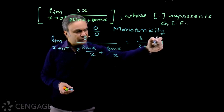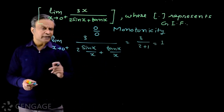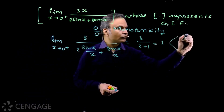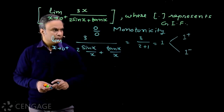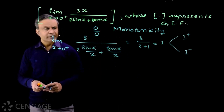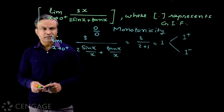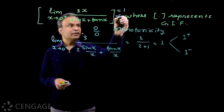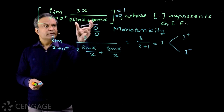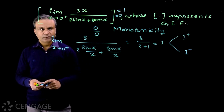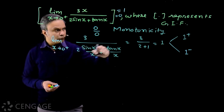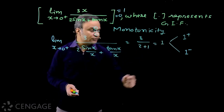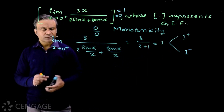Now we know that this value is not exactly 1. This value may be slightly more than 1 or slightly less than 1 — it is 1+ or 1−. If this value is 1+ the floor will be 1, and if this value is 1− the floor will be 0. So here we have a very sensitive value. Let's check whether this limit is 1+ or 1−. This limiting value being slightly more or less than 1 is difficult to decide directly.